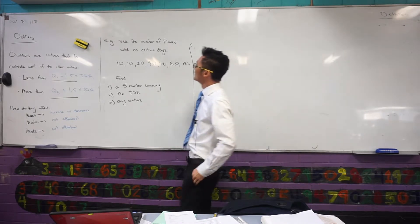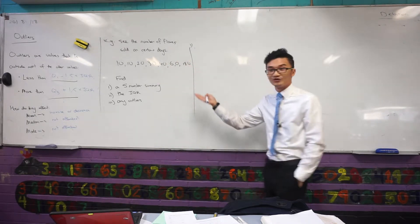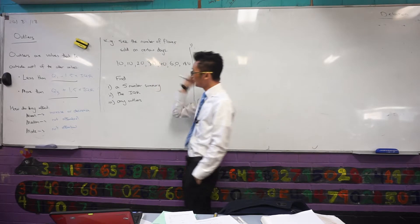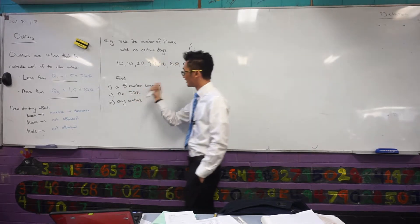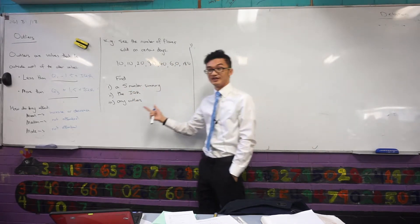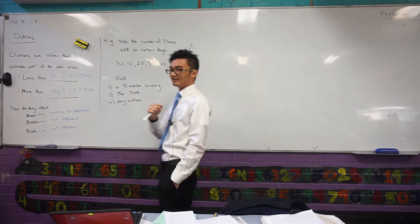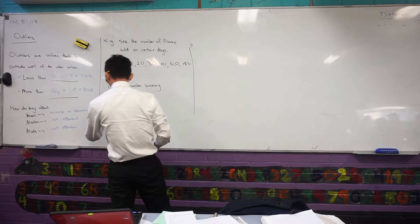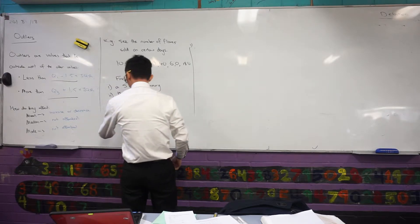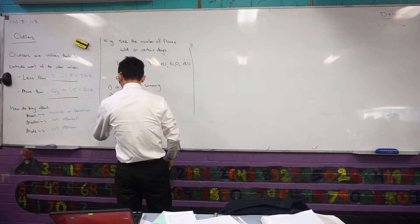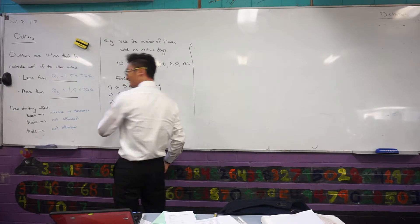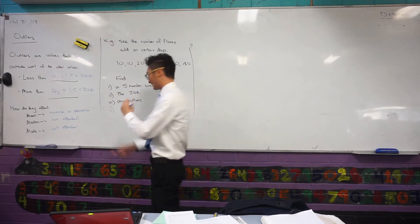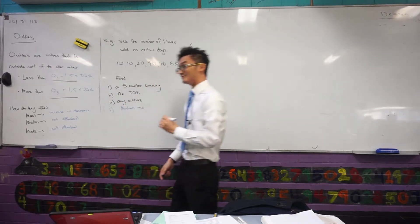Let's come back to this example here. We've got a number of flowers sold on certain days, and for this data set we want to find a five number summary, the interquartile range, and then we want to identify any outliers. Mick, can you help me out? What values do I actually need for my five number summary? Median? Have a look back. I do need the median.